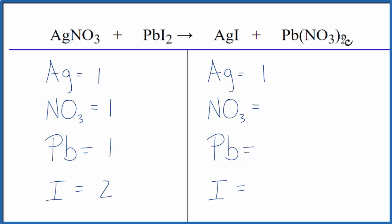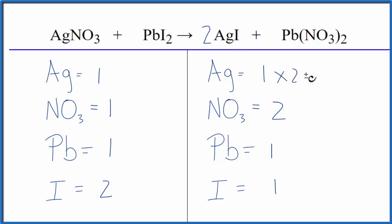So we have 1 nitrate ion, 1 lead, 2 iodides. On the product side, we have 1 silver, 2 of these nitrates, 1 lead, and 1 iodine. Why don't we balance the iodines first? We could just put a coefficient of 2 in front of the AgI. 1 times 2 gives us the 2 silvers, and 2 applies to everything, so 1 times 2 gives us 2 iodine atoms.